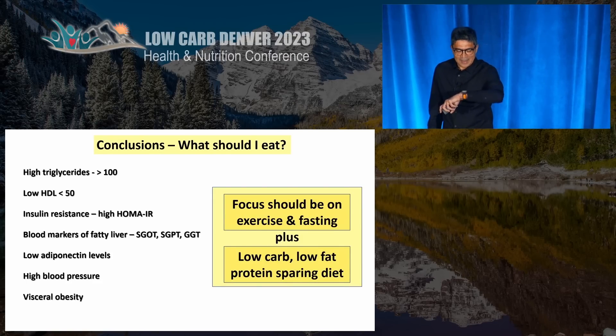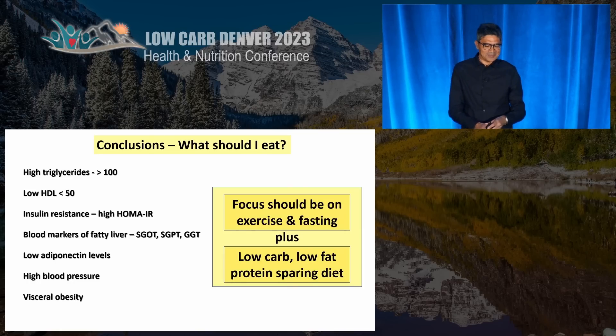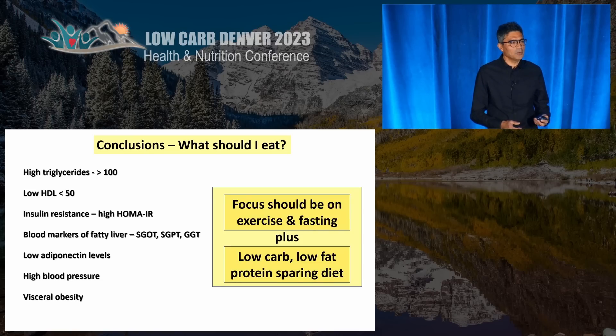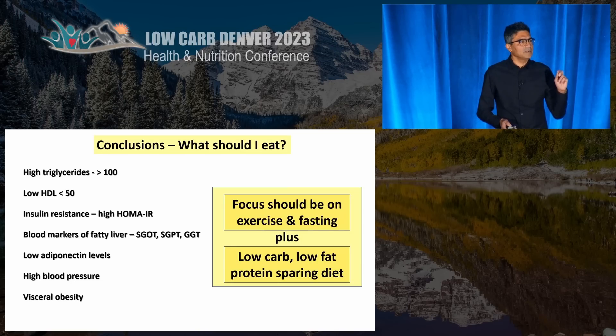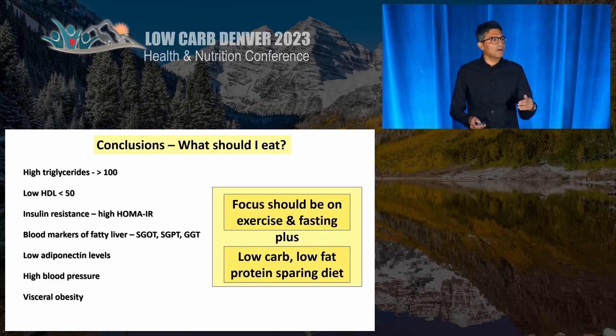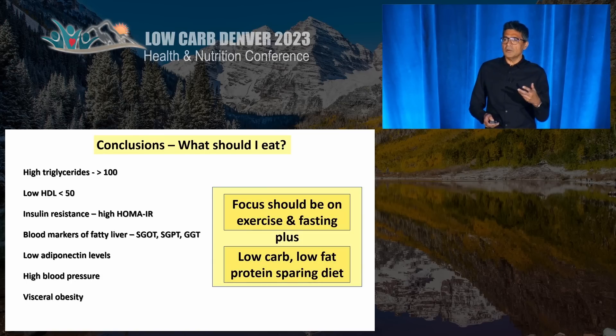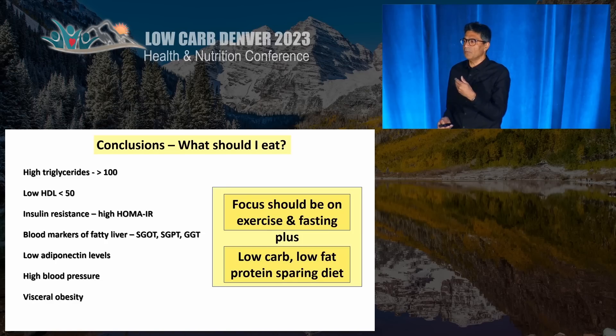So the final question, and this is my last slide: should a person who has evidence of lipotoxicity — high triglycerides, high insulin resistance, low adiponectin, high blood pressure, and visceral obesity — be given license to eat as much fat as they want, as we do as low-carbers? I would like to submit that the initial focus should be on fasting and exercise, and perhaps until their blood markers improve, they should be on a low-carb, low-fat, protein-sparing diet. That's my message.